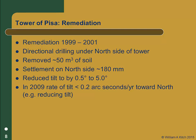More importantly, the remediation reversed the rate of tilt to less than 0.2 arc seconds per year, but this time to the north. This northern tilting is expected to decrease to zero over the next one to two decades, and the tower is expected to remain stable for at least 200 years. If you are interested in learning more about the remediation of this tower, there is an excellent paper by Burland, Jamiolkowski, and Viggiani listed at the end of the presentation, available open source through the International Journal of Geoengineering Case Histories.